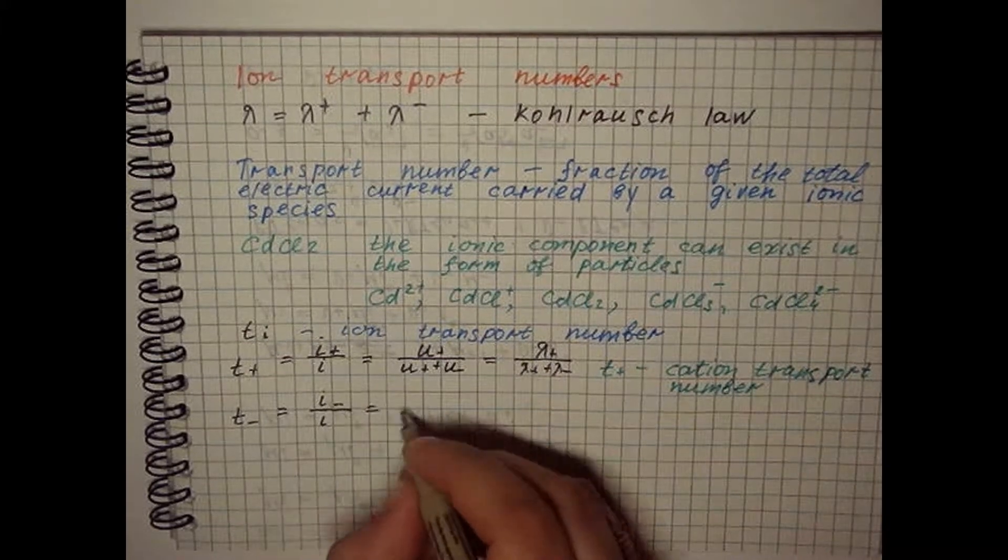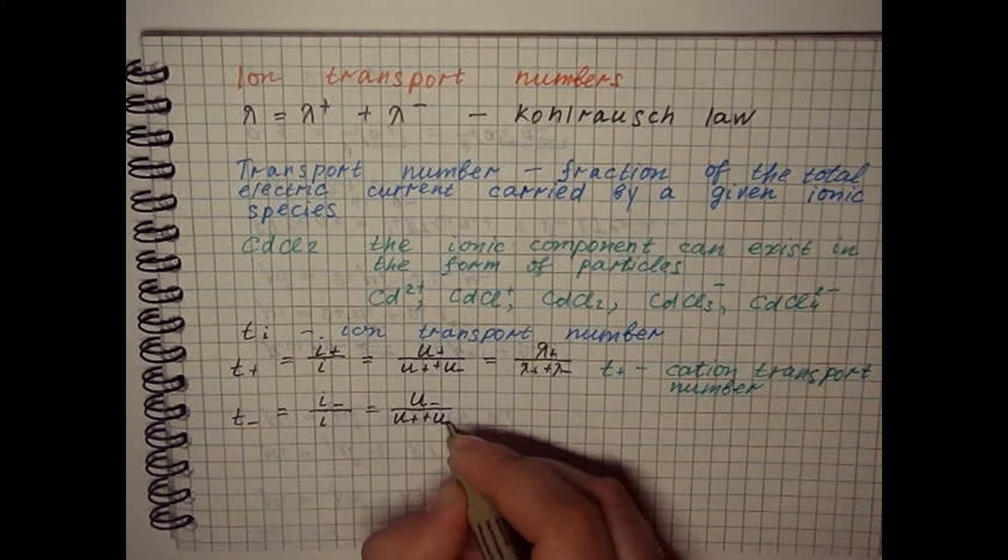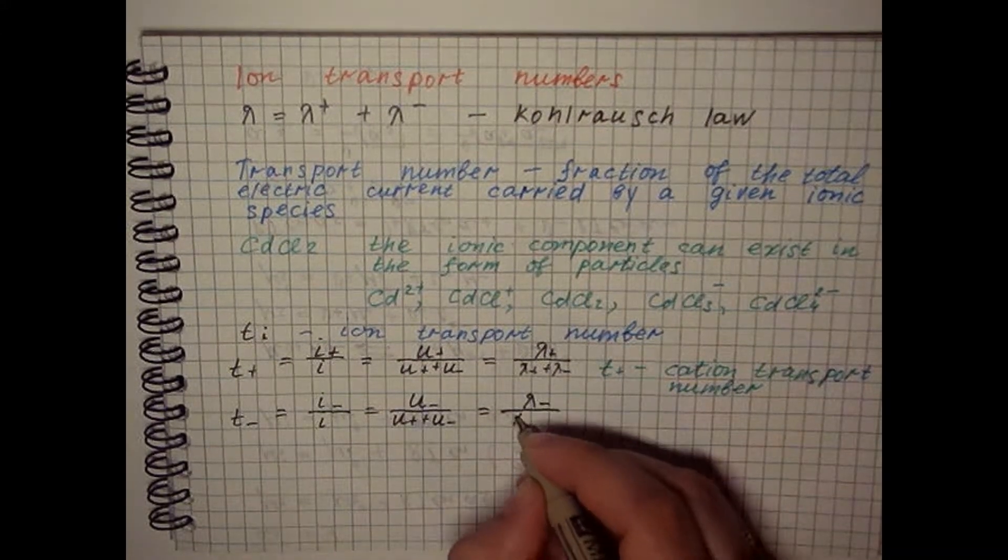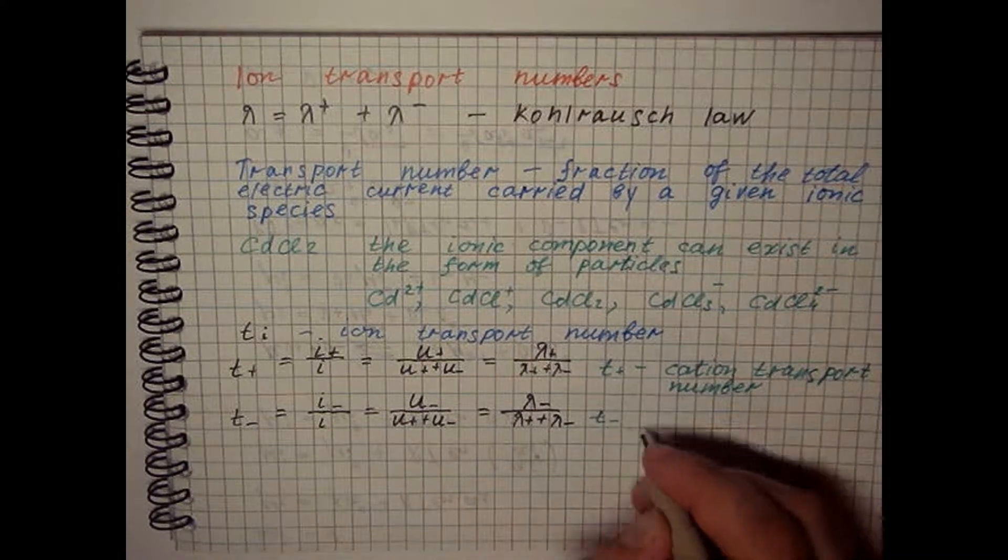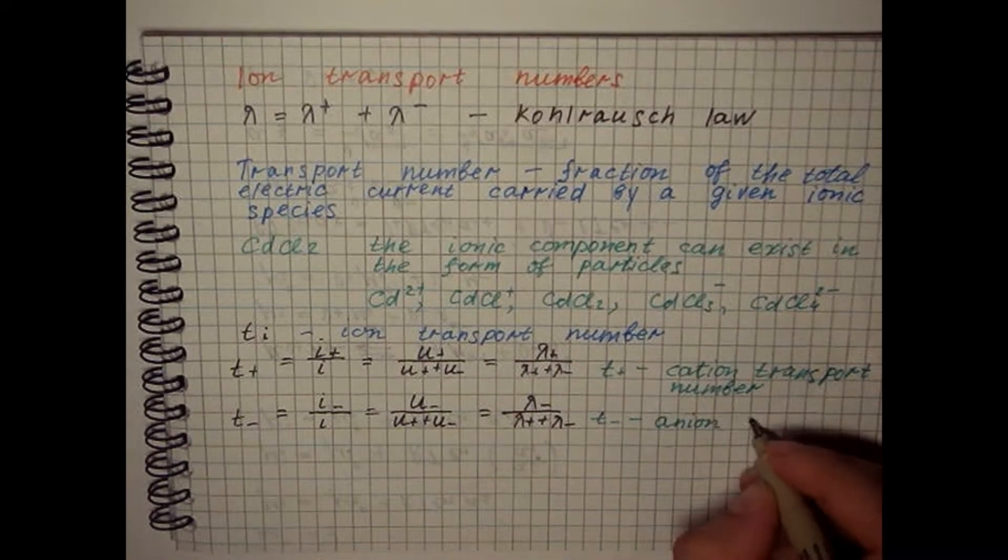In the future, only those systems are considered in which the electric transport number coincides with the experimentally determined transport number of the ion component.